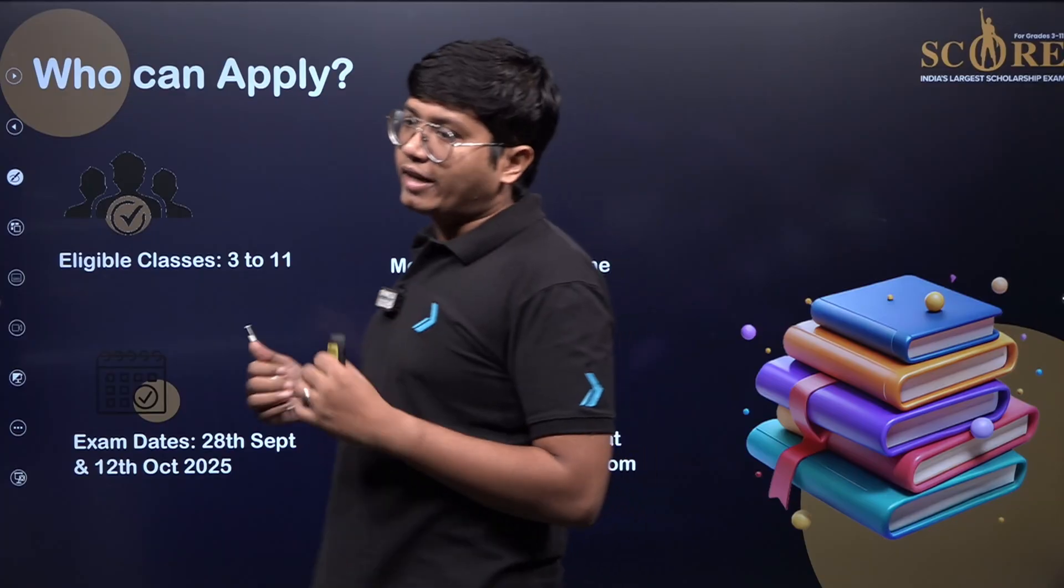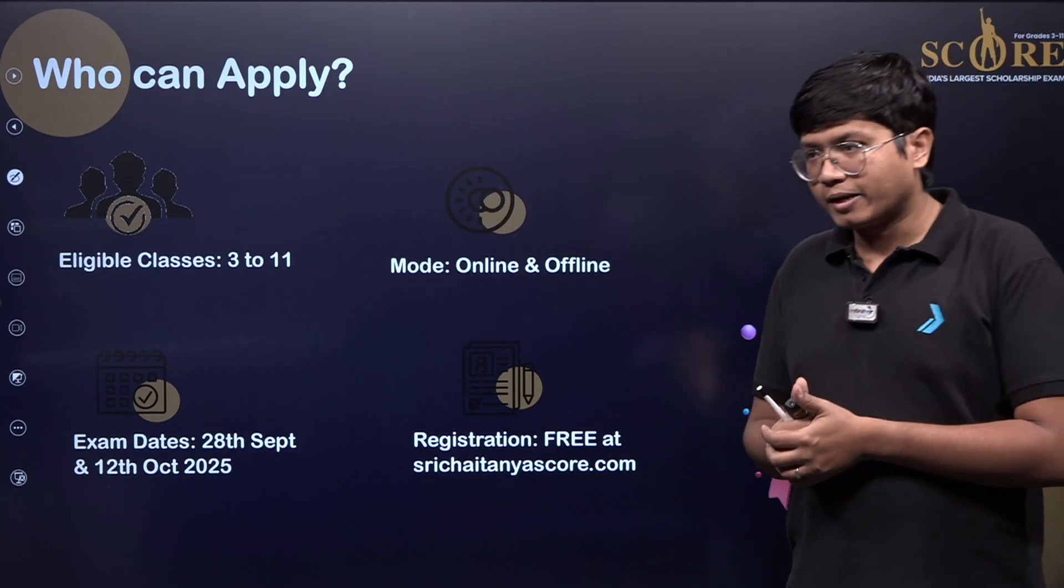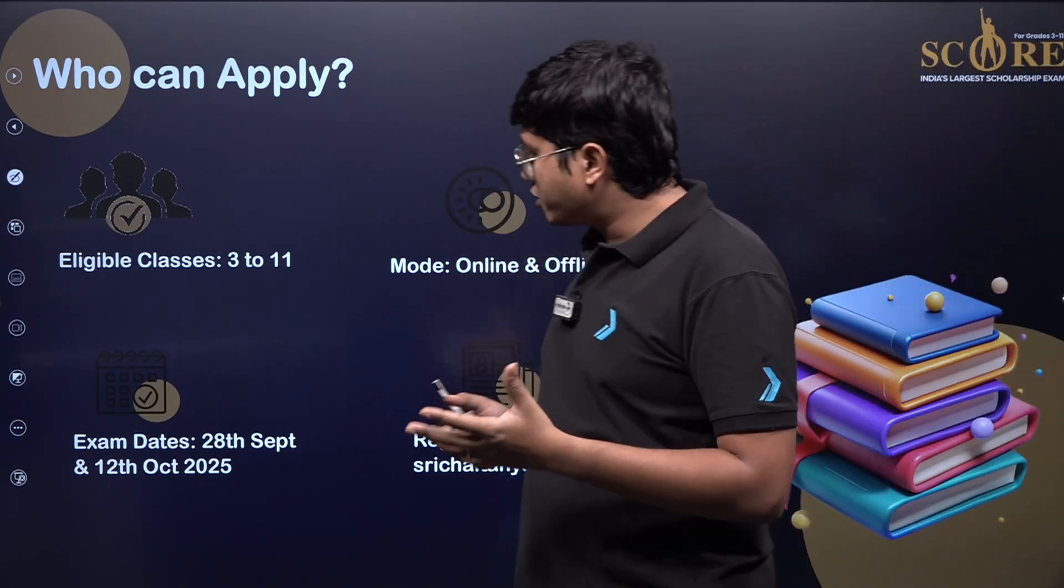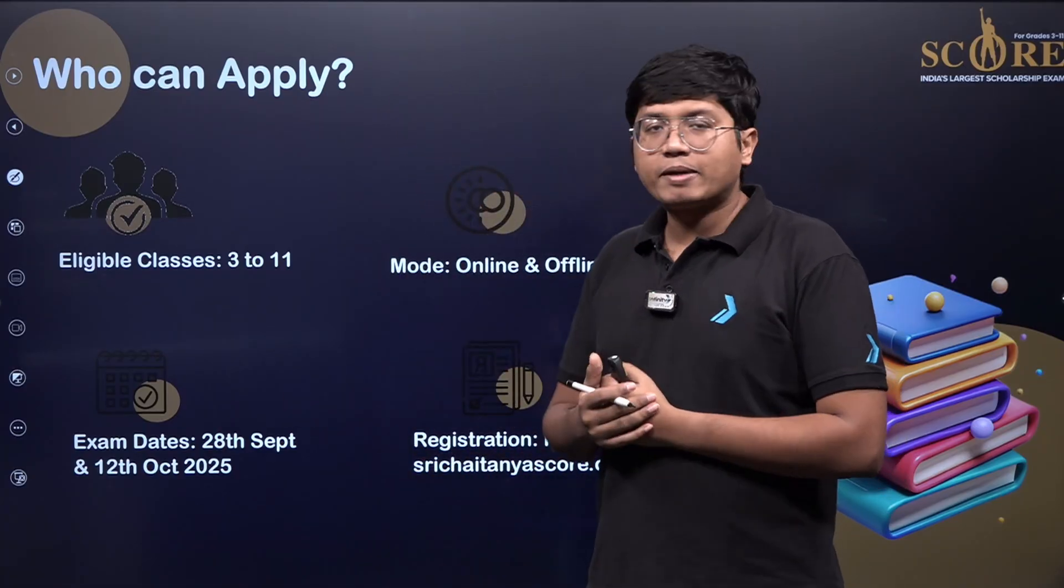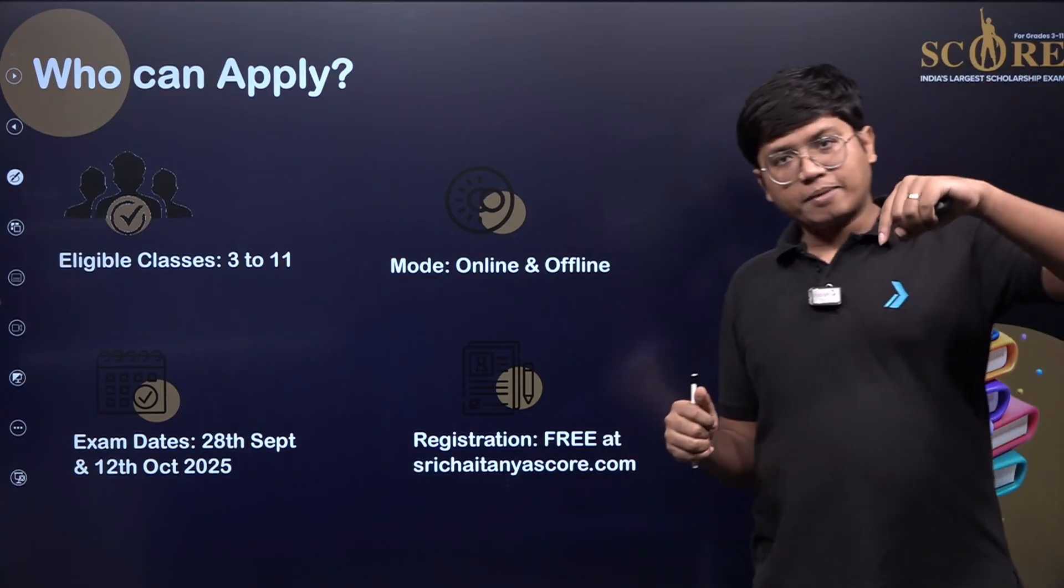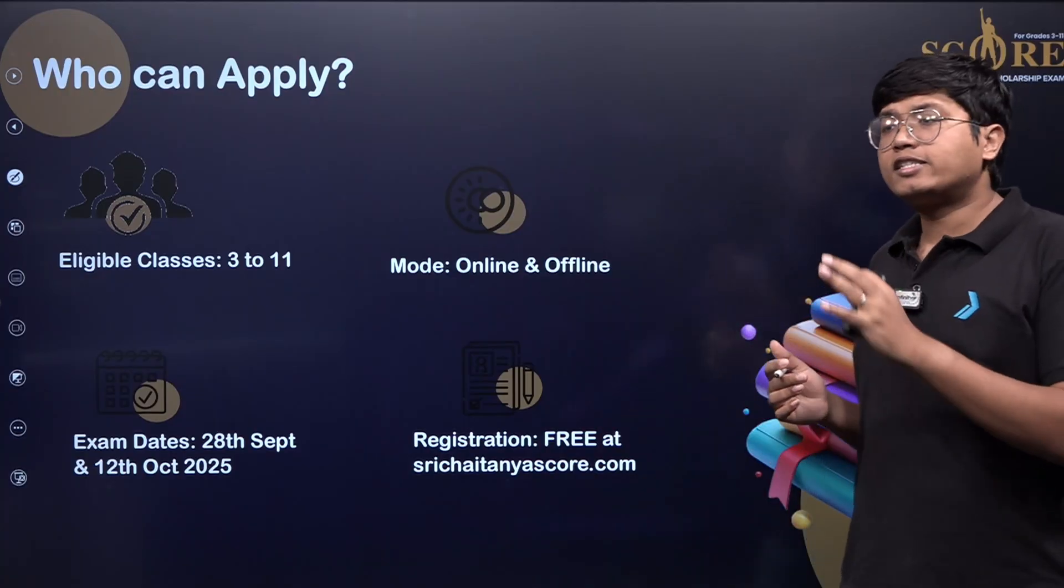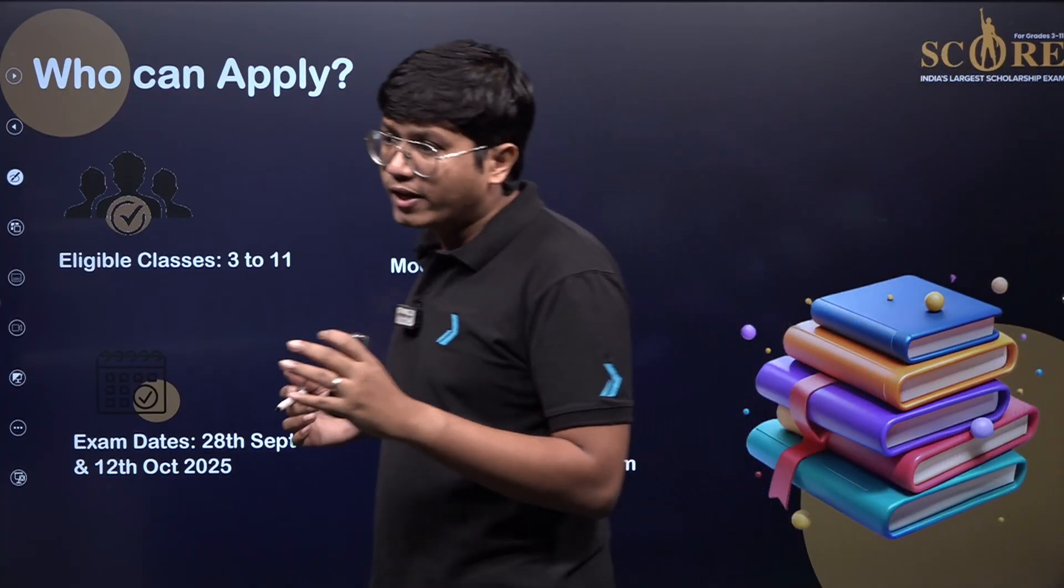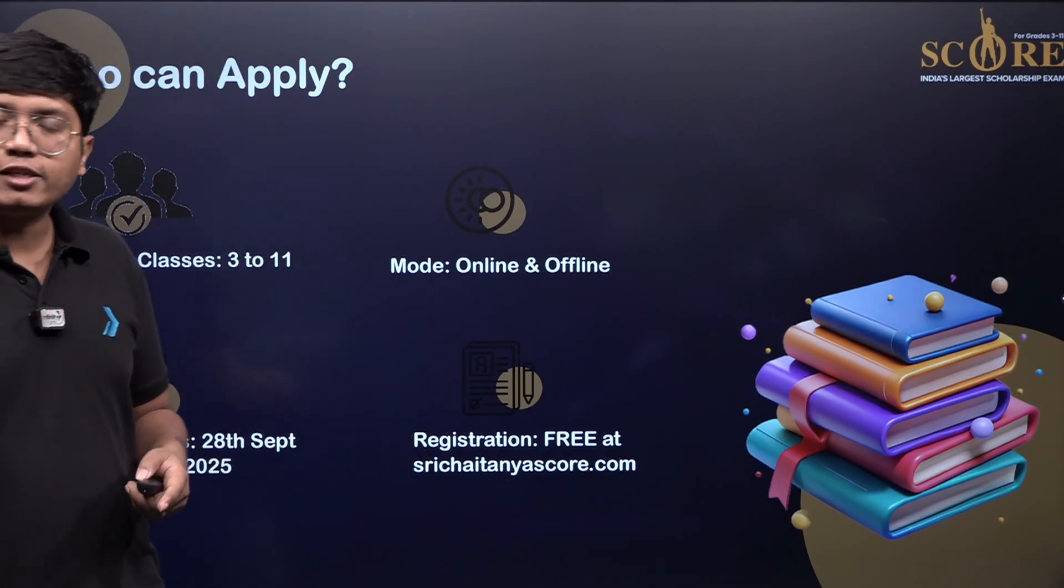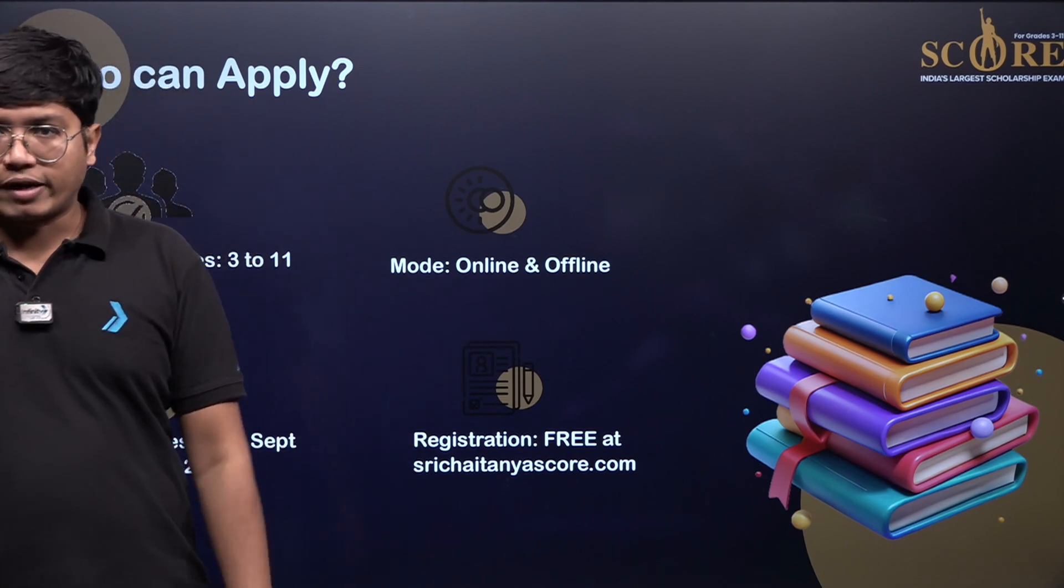So with that, we finish the 10 questions here. We will bring another session where we will discuss even more questions so that you have a much better idea. By the way, this is just for the registration. I have already mentioned the exam dates are 28th September, 12th October. You can register; it is completely free. There will be a link in the description. Also, you can go to this website, shrichaitanyascore.com. Over there you can register. Registration is completely free. You can give the exam both online and offline. There are offline centers all over the country. It is not just in the southern states, even in the northern, eastern, western states. Everywhere you will find it.